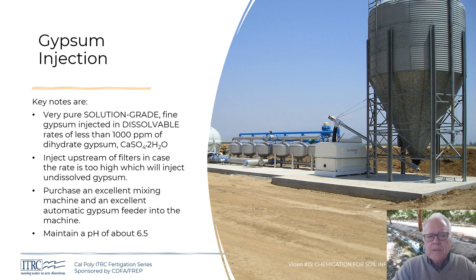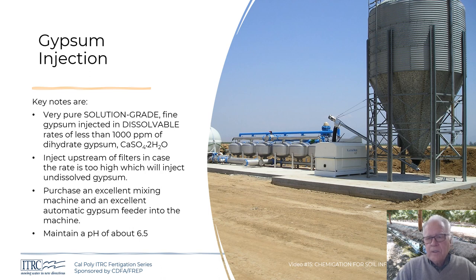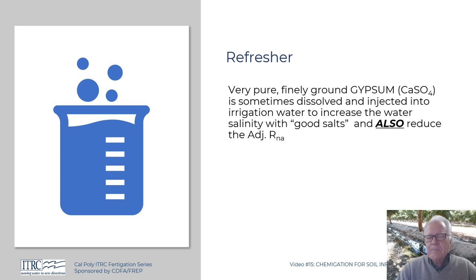Purchase an excellent mixing machine and automatic gypsum feeder. If you also need to add acid, do so as well, maintaining a pH of about 6.5. If it's a chemistry problem associated with the adjusted SAR, run the formula with existing water quality and with an increased calcium concentration, then see what the impact should be using the permeability hazard table. There's no magic here — it's chemistry.